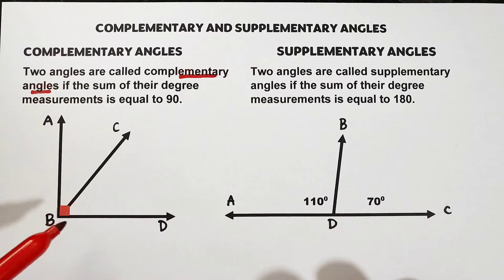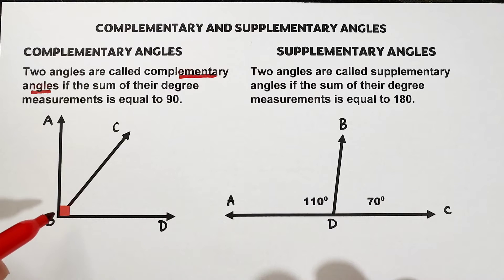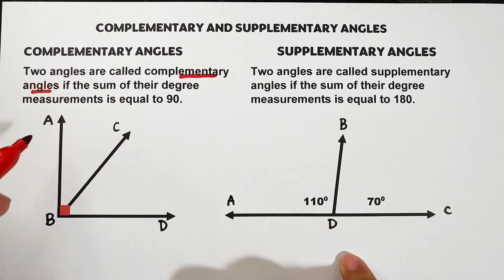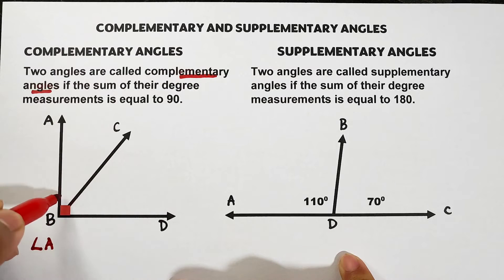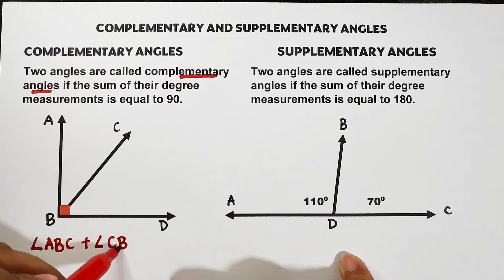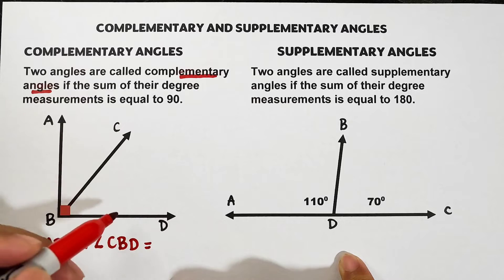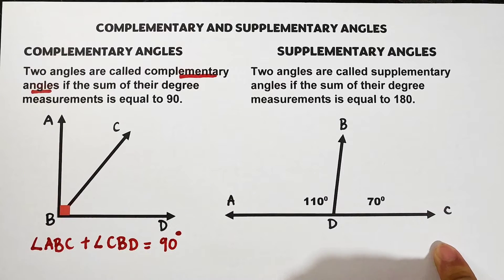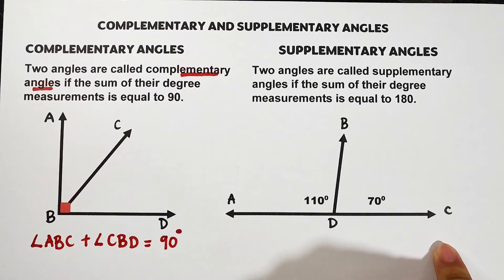Here is an illustration where originally we have angle ABD, which measures exactly 90 degrees because this is a right angle. To illustrate which two angles are forming complementary angles, the first angle is angle ABC and the second angle is angle CBD. When you add them or combine their measurements, the total is 90 degrees.